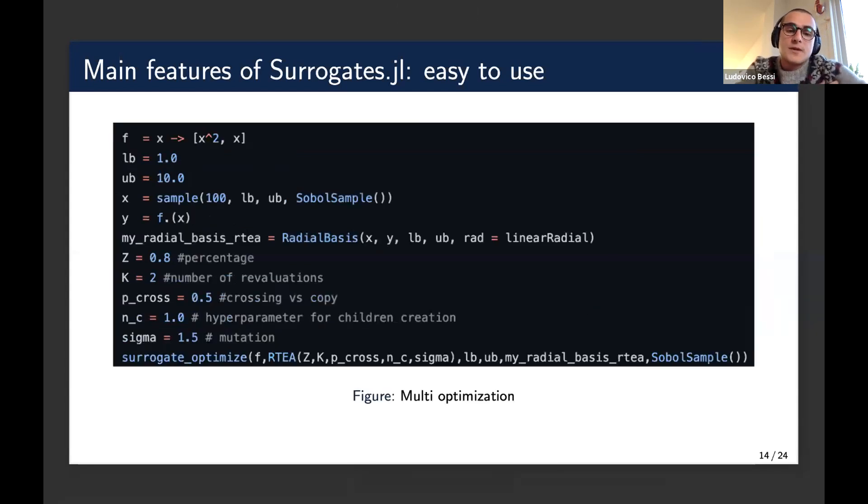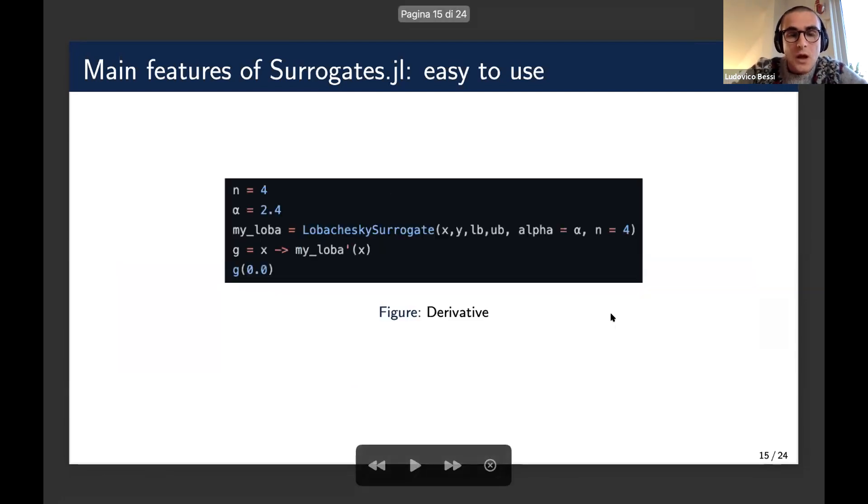Here we have also multi-optimization in the sense that we could also have a surrogate that approximates a function which has multi-dimensional output, like here. And not all the surrogate models allow this, but for example, the radial basis functions do. And so here's an example. And even in this case, the workflow is very simple and neat. After we fit the surrogate, we can just, by setting some hyperparameters, we can call this RTEA algorithm, which is an evolutionary algorithm that optimizes the surrogate.